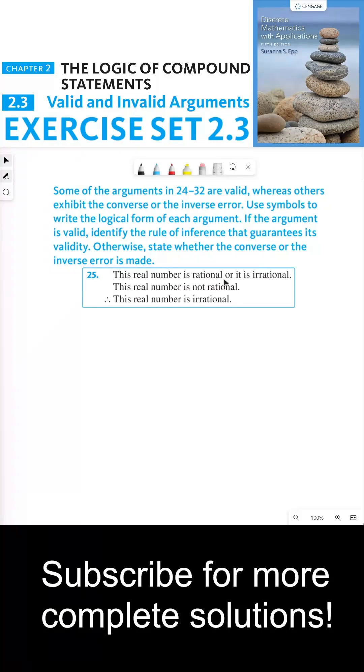25 says, this real number is rational or it is irrational. The second line is, this real number is not rational, and the conclusion is, this real number is irrational.